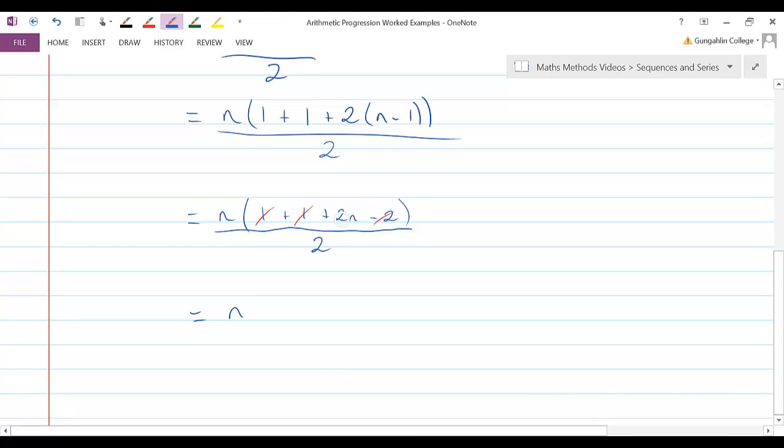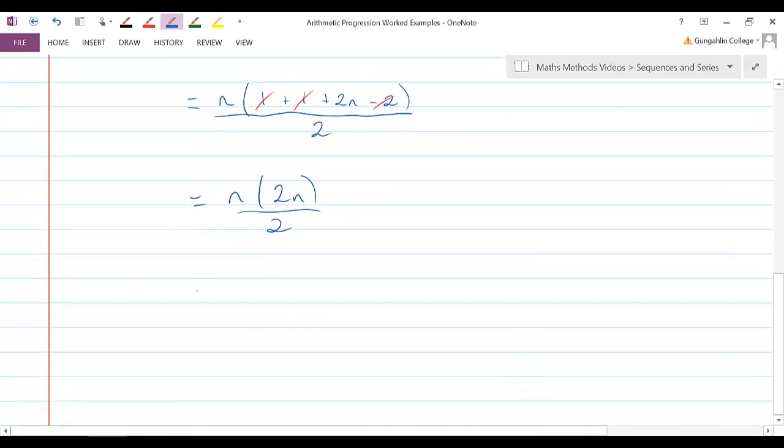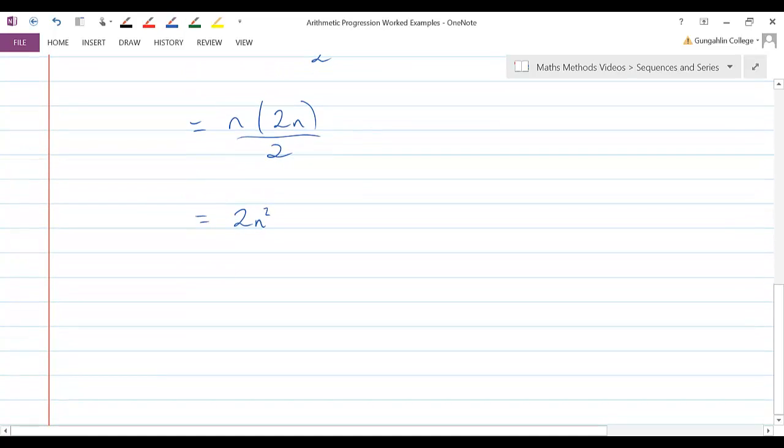And on the top I'm left with n times 2n. Expanding this top bracket here, n times 2n is 2n squared. That 2 is still on the bottom. And very nicely my 2s are going to cancel. And I'm left with n squared.